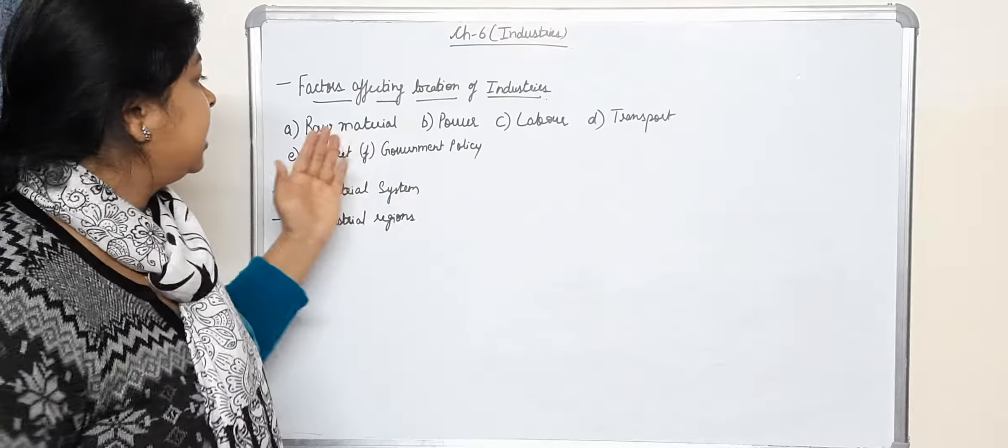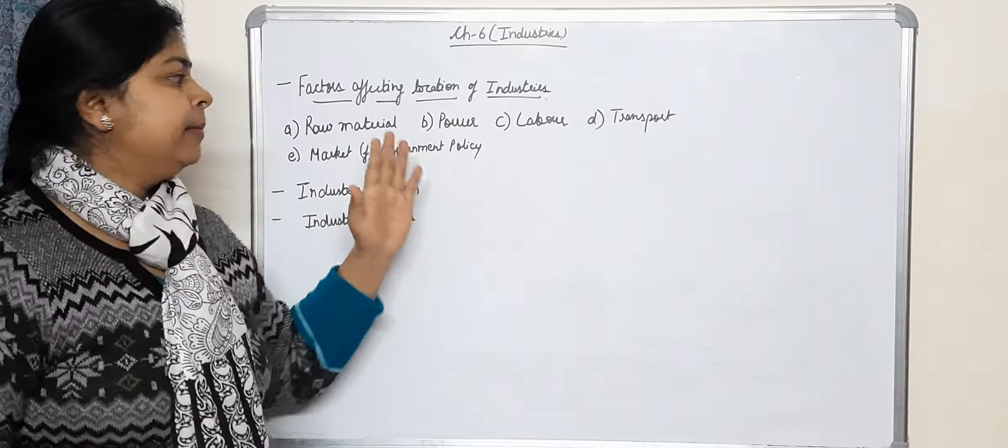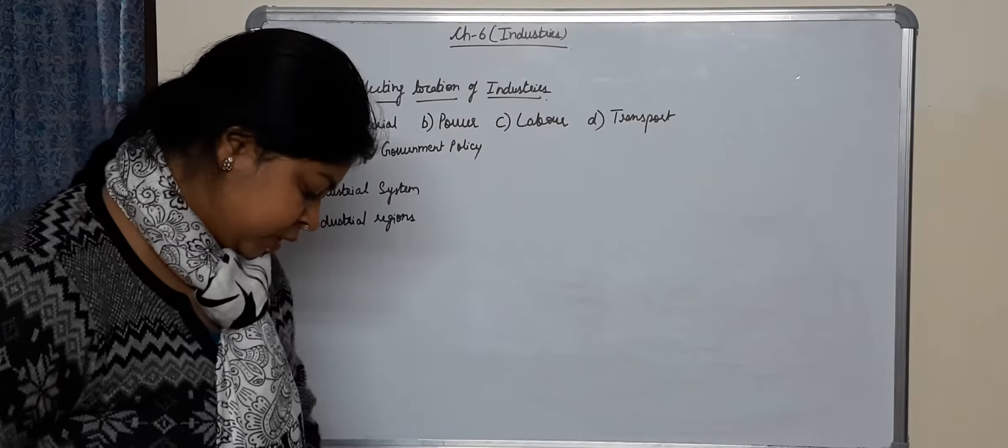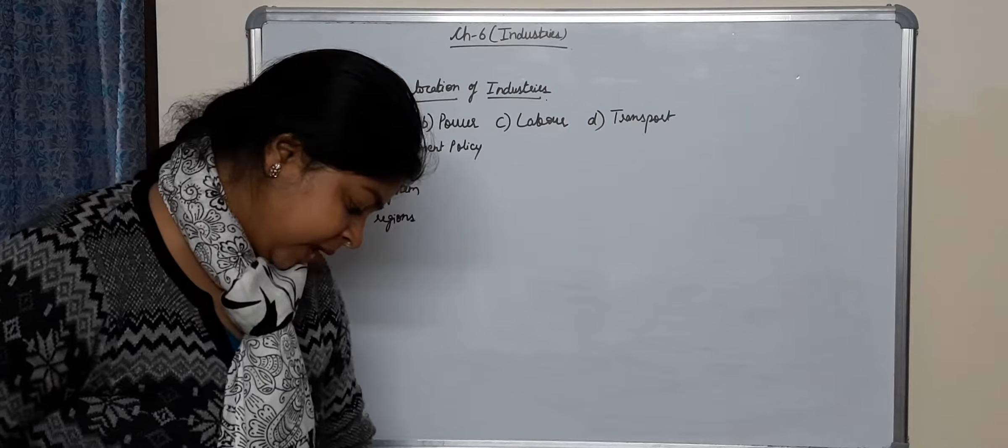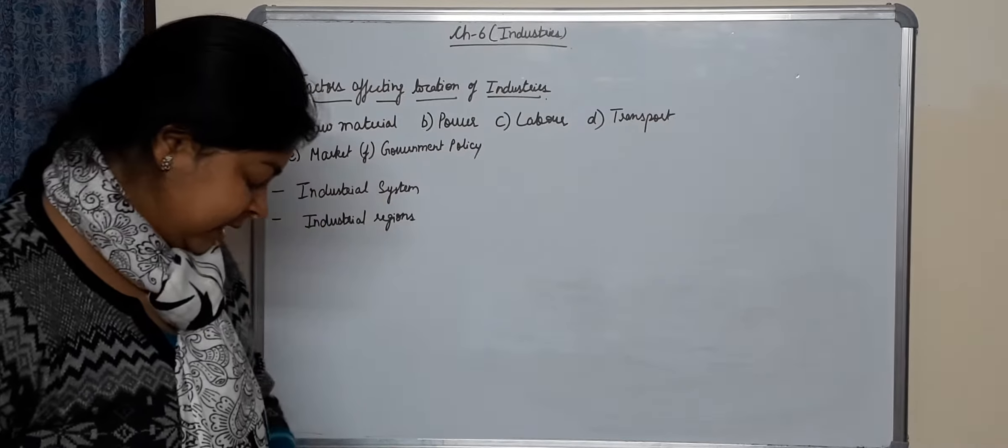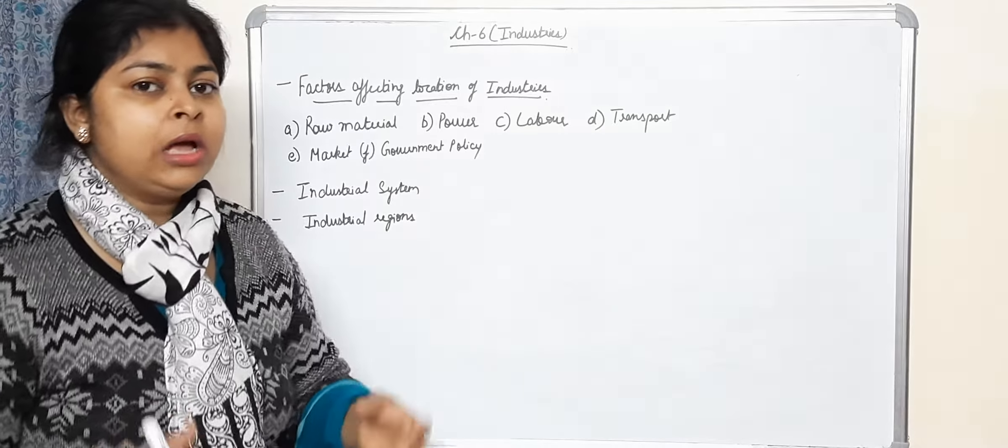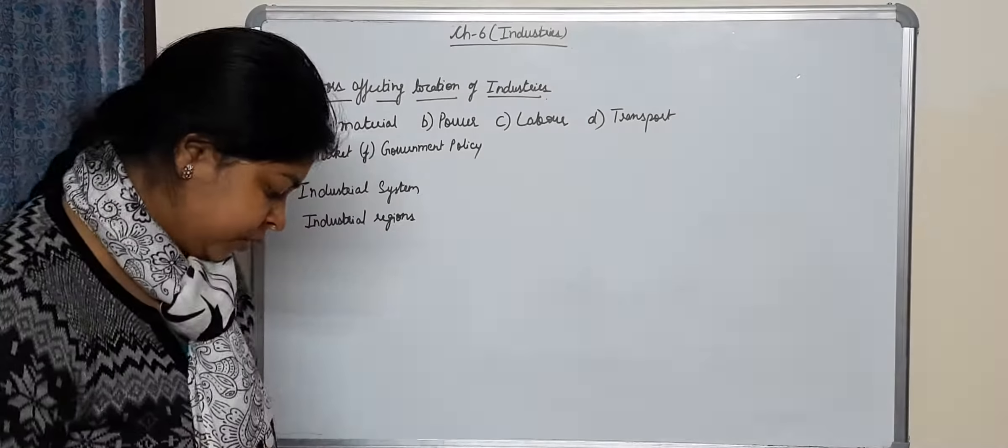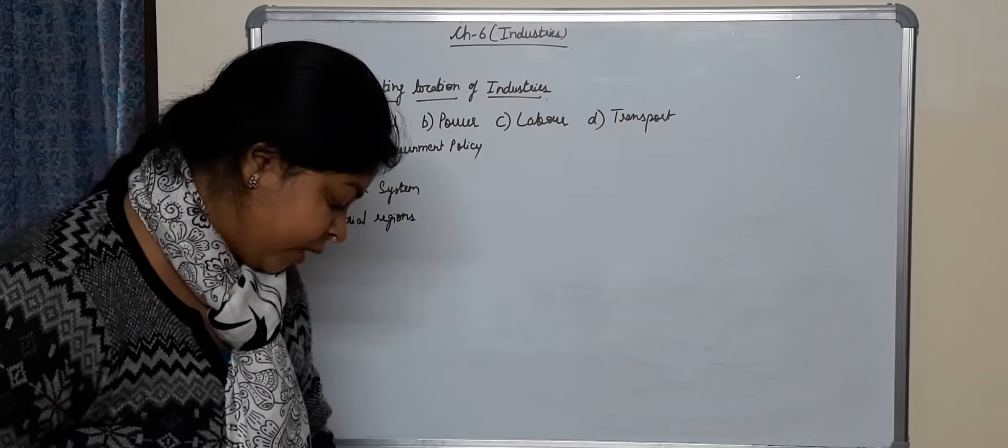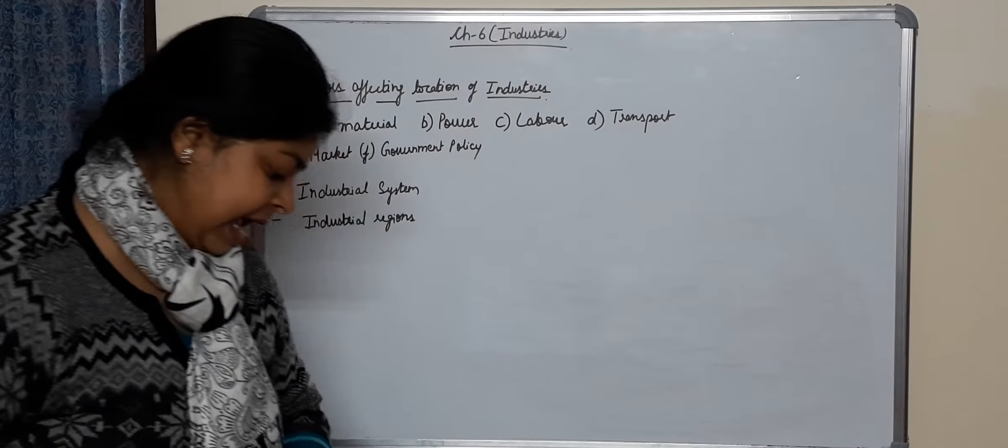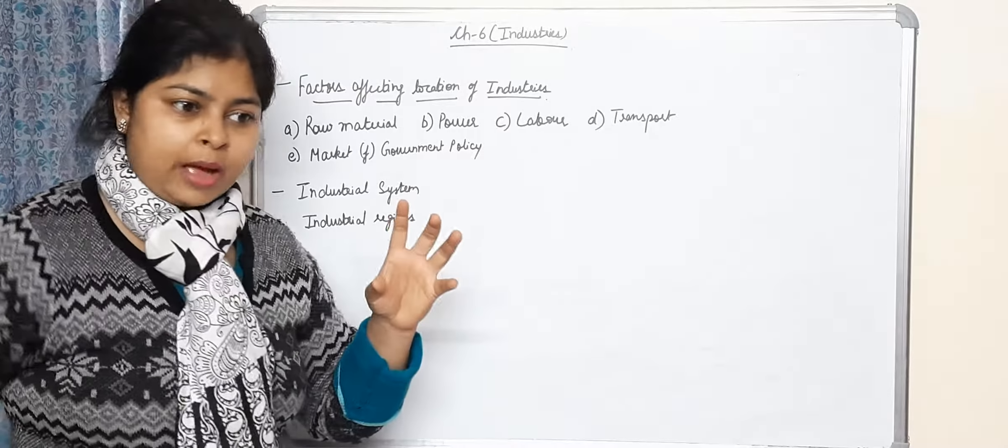We will explain by reading each and every point. Raw material, look in your book page 161. Industries that need large amount of bulkier heavy raw material are located near the source of raw material. For example, the iron and steel industry requires raw material like coal and iron ore, so the steel plant is located near coal fields and iron ore mines.